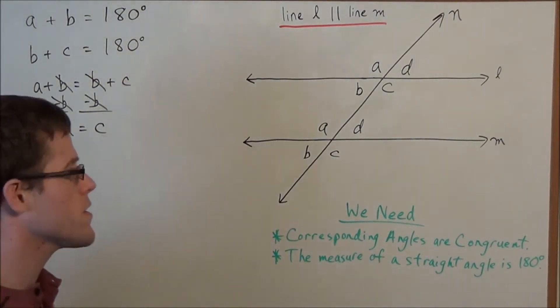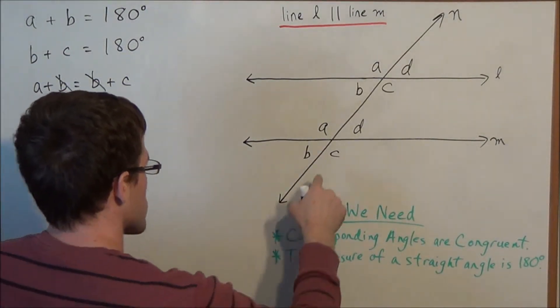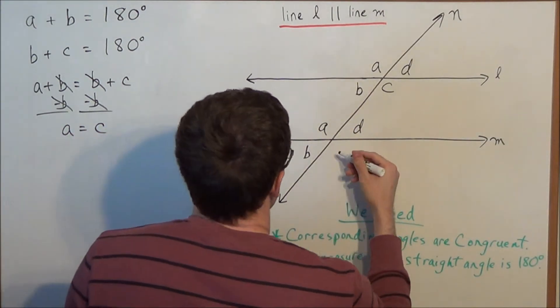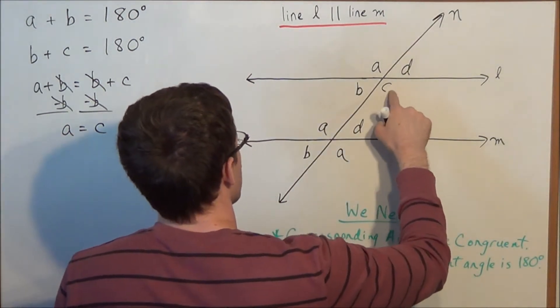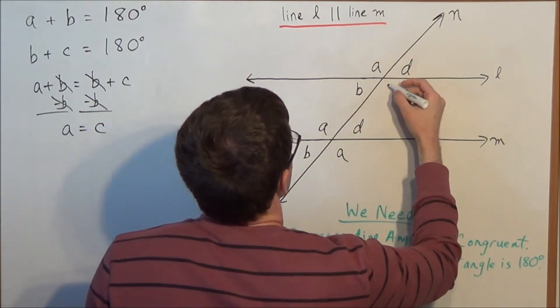So the measure of angle A equals the measure of angle C allows us to rename this angle here. We can name this angle A. We could also do the same up here. We could rename angle C to angle A.